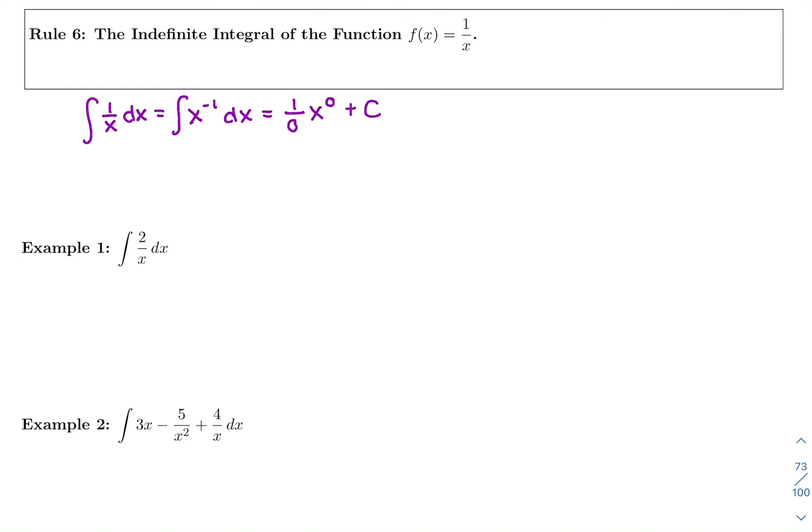So why is this its own separate rule when we could just rewrite it and add 1 as normal? Well, the reason is we can't do that. You can't divide by 0. So this is the one power where we don't get to add 1 to it and divide by it and put it as our new power because it makes us divide by 0.